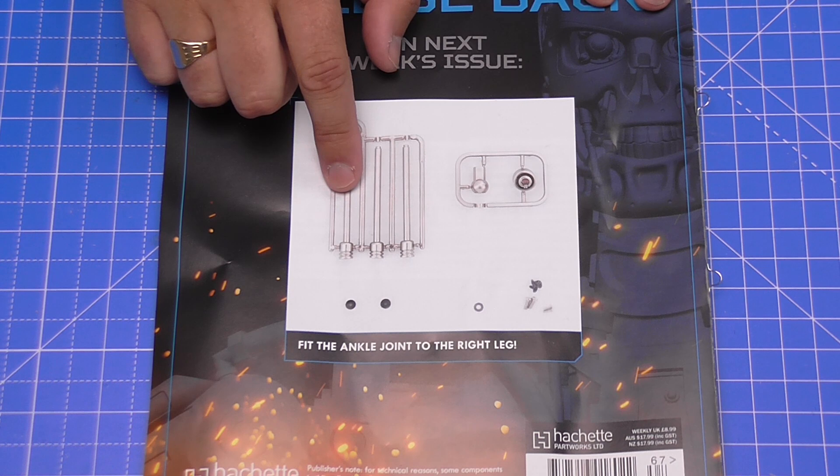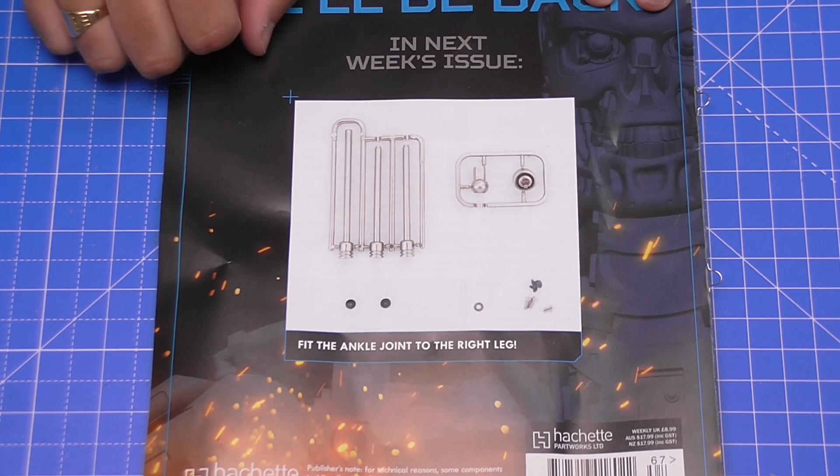In the next issue, as you can see there, we're going to be fitting the ankle joint to the right leg. So that is the ankle joint. The Terminator at the moment is actually sitting on the floor just down there - you can see his little head. He was up there but I was a bit too nervous about him taking a fall off there for the second time in its life, which I don't want to happen again. It's actually in really good condition at the moment.